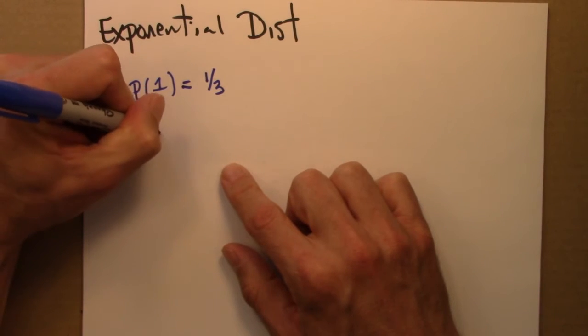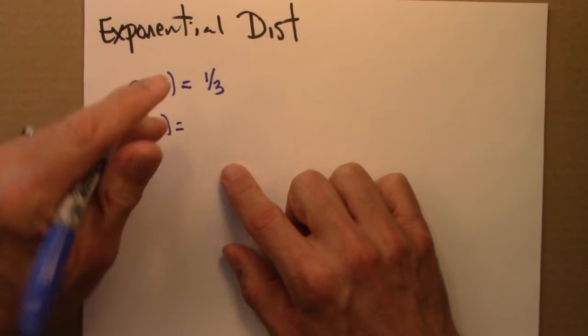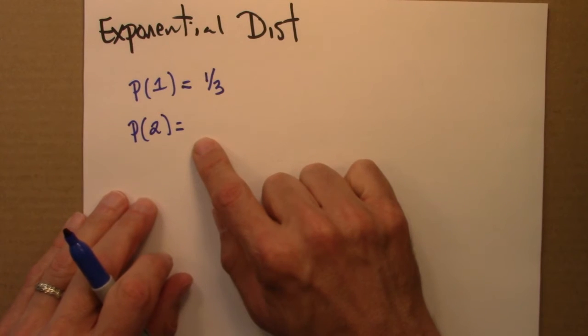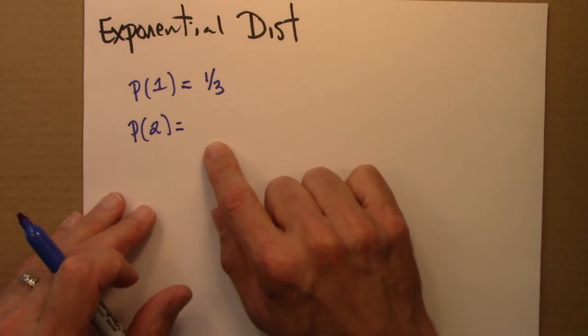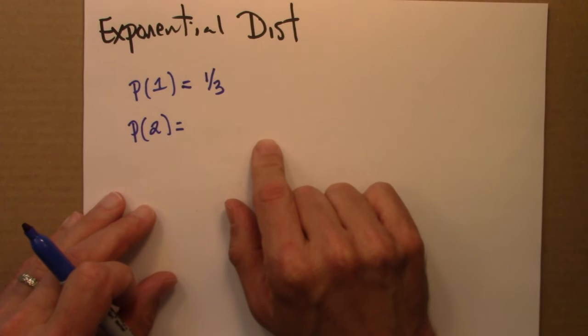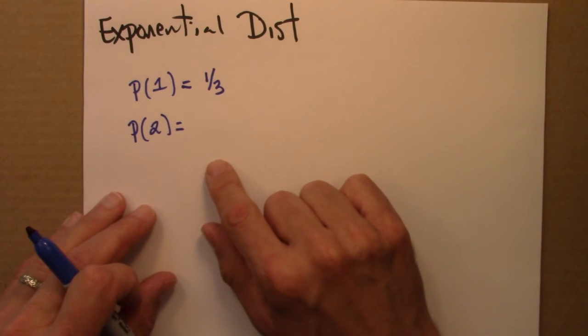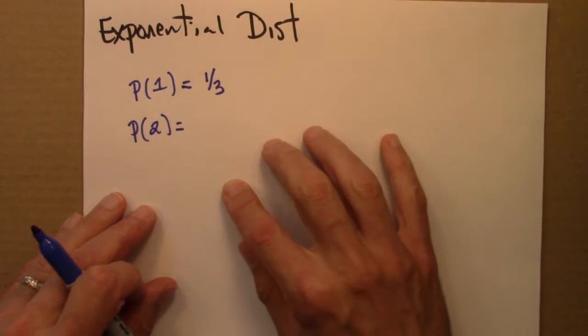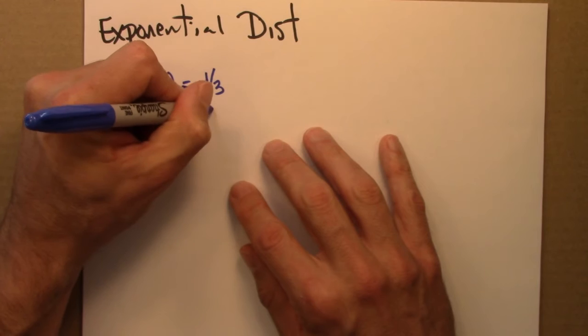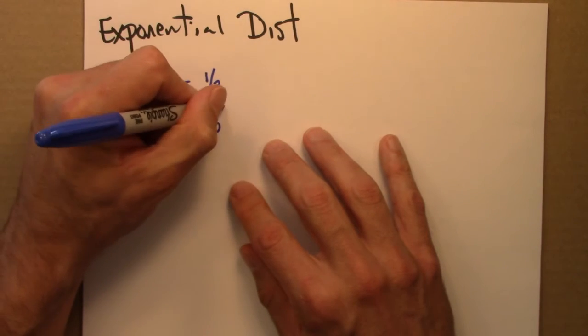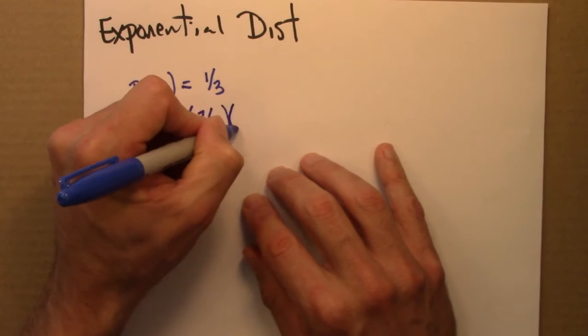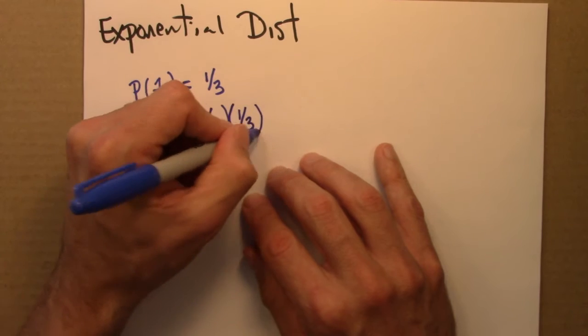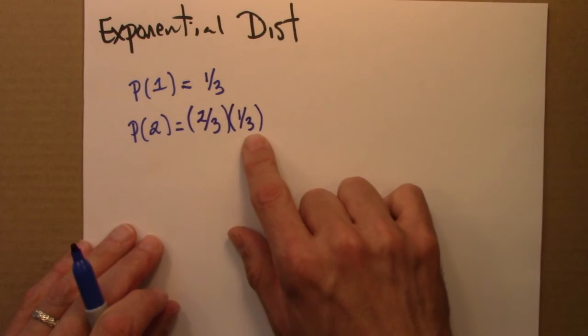What about the probability that it takes two throws? Well, two things have to happen. I have to miss the first throw and make the second throw. I miss the first throw with a probability of two thirds. If I make it a third of the time, I don't make it two thirds of the time. So two thirds of the time, I'm going to miss that throw. And then a third of the time, I'll make the second throw.